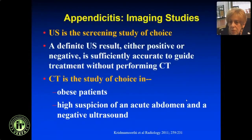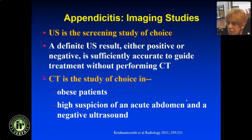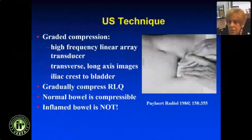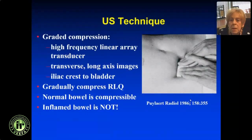Ultrasound remains the screening study of choice. A definite ultrasound result, either positive or negative, is reliable enough to guide treatment without further imaging. In the pediatric population, we use CT in obese patients and if there's high suspicion of an acute abdomen with a negative ultrasound, but we start with ultrasound. The technique was first described by Pouliart in 1986, and it's great at compression.